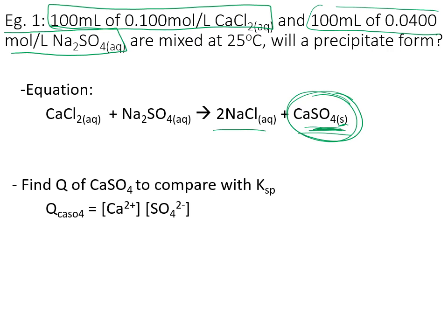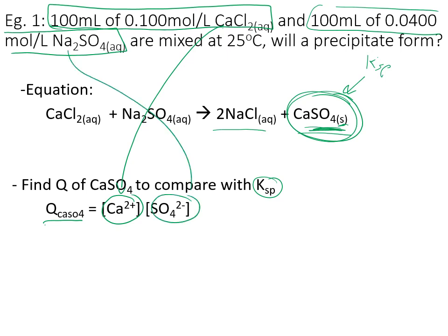To find Q, we write the trial ion product expression — same form as the Ksp equation, but we're not assuming equilibrium yet. The question doesn't give us Ksp, so we'll look up the Ksp for calcium sulfate. We need the concentration of calcium ions from the first solution and sulfate ions from the second. Since these are in separate beakers before mixing, we must do a dilution calculation first.